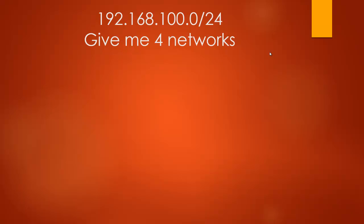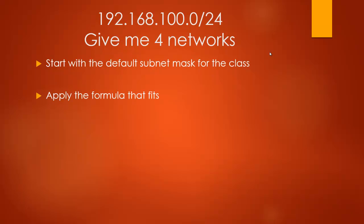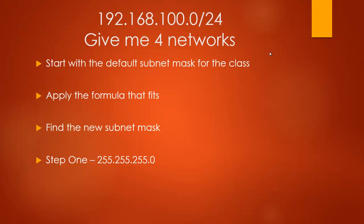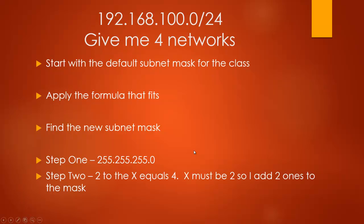Let's do a couple of examples. I'm given 192.168.100.0 from the ISP. I start with the default /24 because that's the default subnet mask for class C. The problem says turn this into 4 networks. My method: always start with the default subnet mask for that class, find the formula that fits, use it, then create the new subnet mask. This is class C because that first number is 192, so the default subnet mask is 255.255.255.0 — I can only work in that last zero.